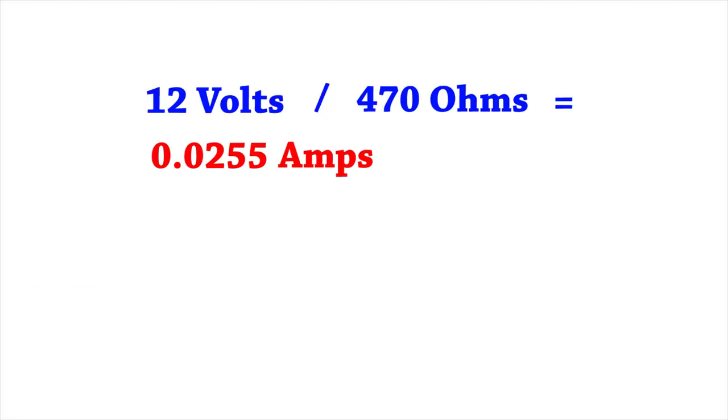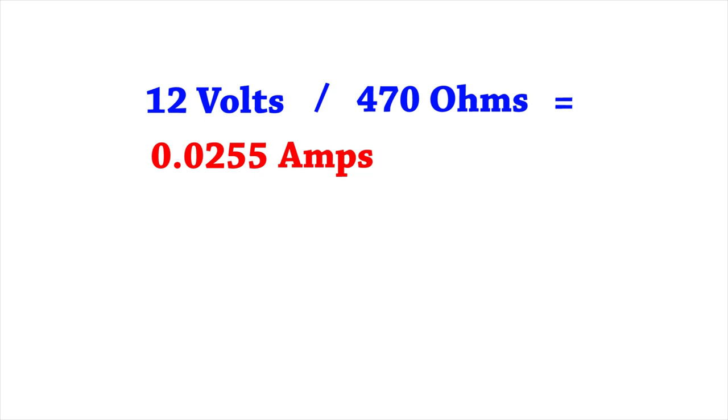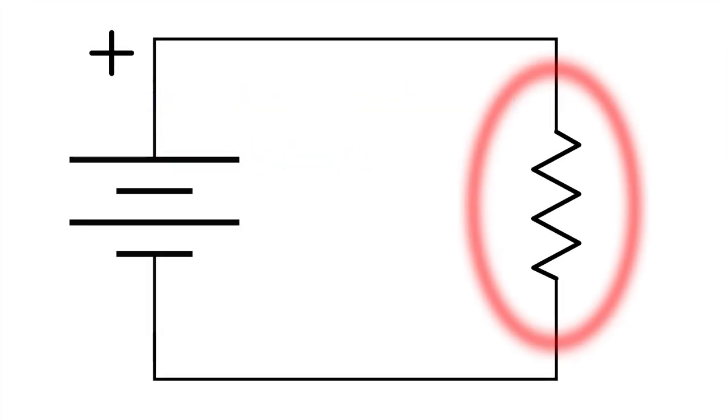So when we perform this calculation, we come up with an answer of 0.0255 amps. Now that we've calculated a value of current, we can use this to calculate the power dissipation in the resistor.